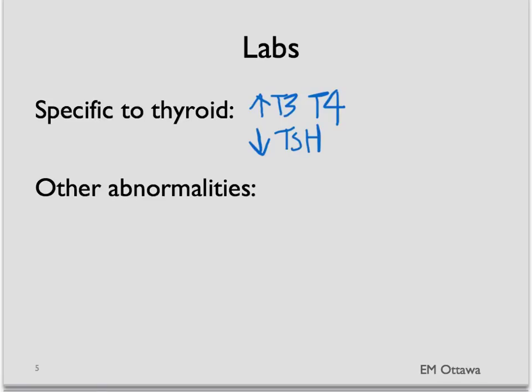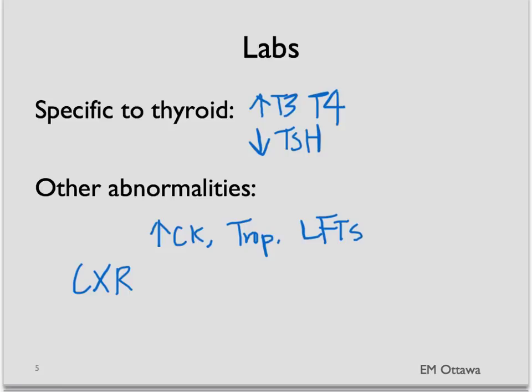Because of the effect of thyroid storm on the body, we expect the patient to have a high CK, sometimes a high troponin, and high LFTs. In a patient who is short of breath or you think is in pulmonary edema, a chest X-ray is often helpful. Also, if the patient is in any tachyarrhythmia, a 12-lead ECG or rhythm strip would be very helpful in sorting this out.